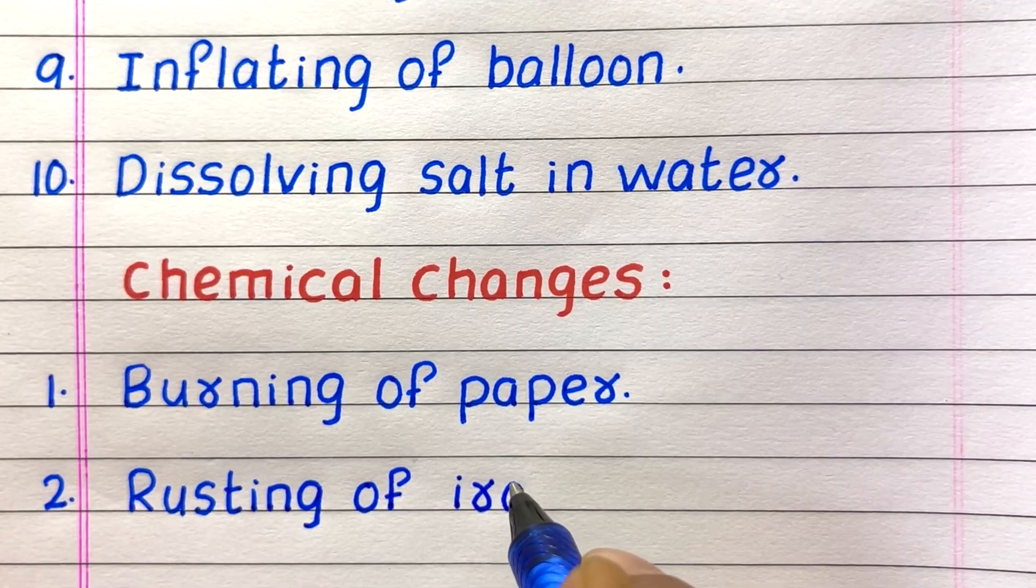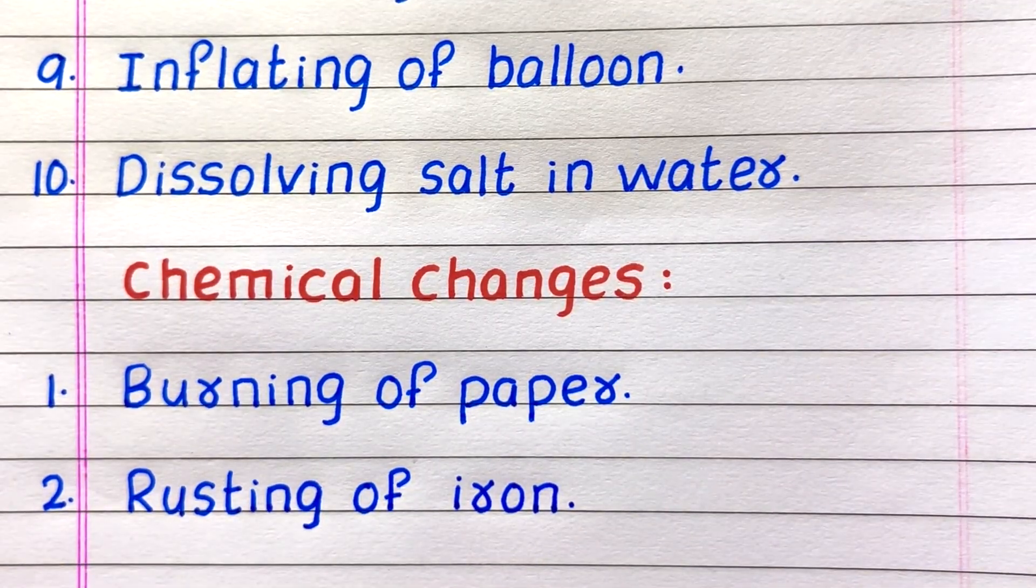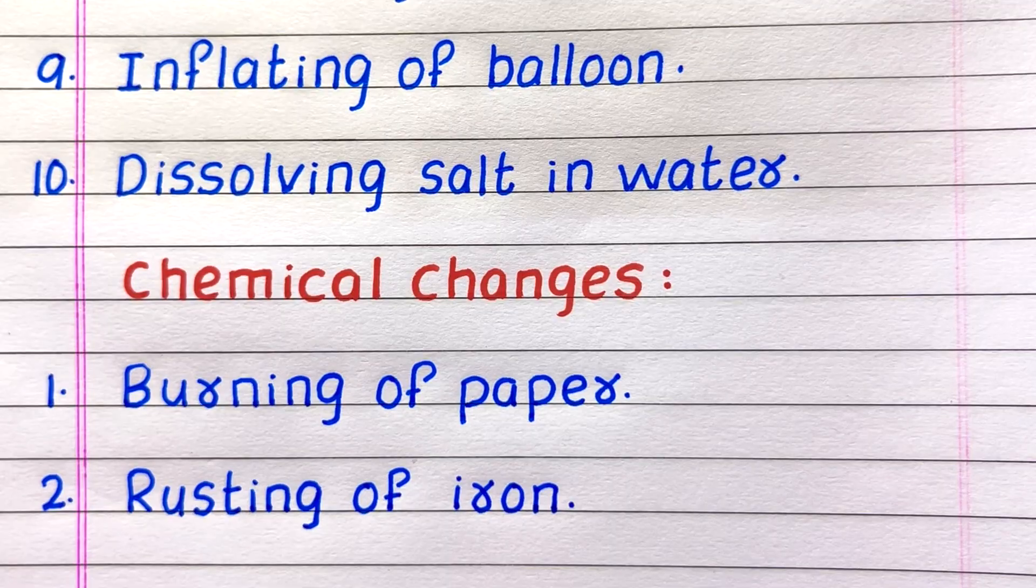First chemical change is burning of paper. Second, rusting of iron.